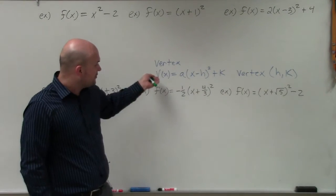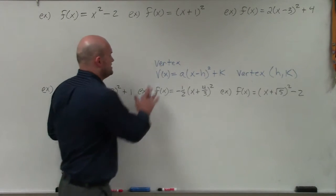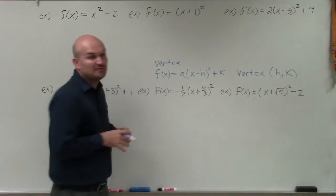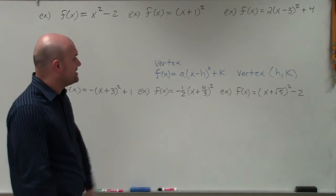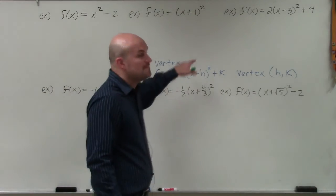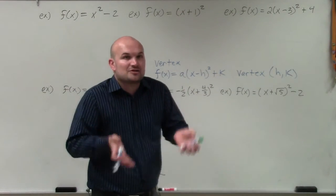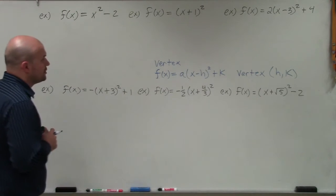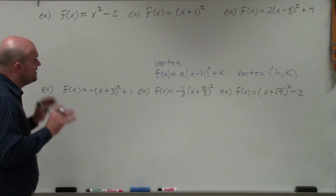Our vertex form is f of x equals a times x minus h squared plus k, where the vertex is going to be the values of h and k. Notice it's x minus h, but we're looking at the actual value of h. That will come into play as we go through the examples.